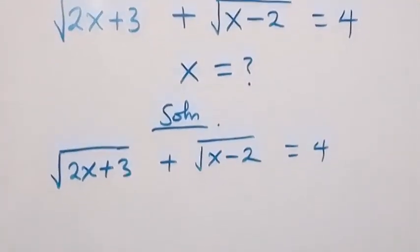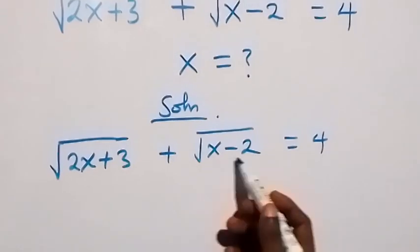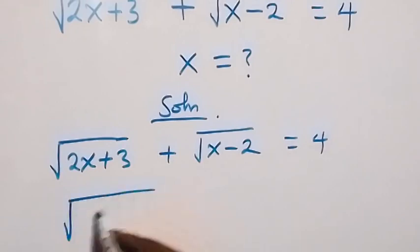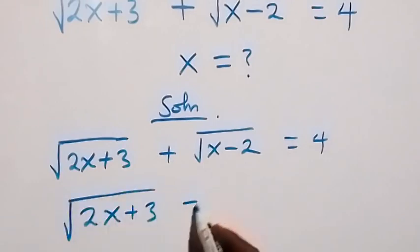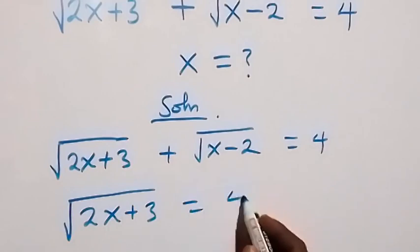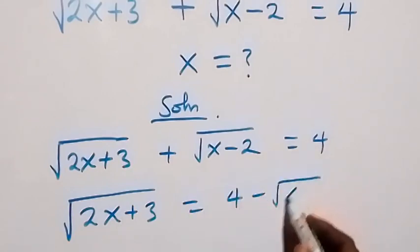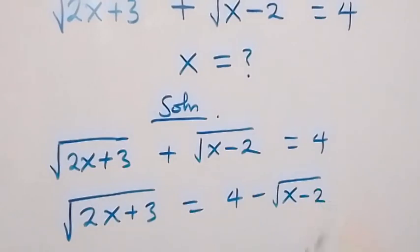From here, let's take this square root of x minus 2 to this side. We have left: square root of 2x plus 3 equals 4 minus square root of x minus 2.